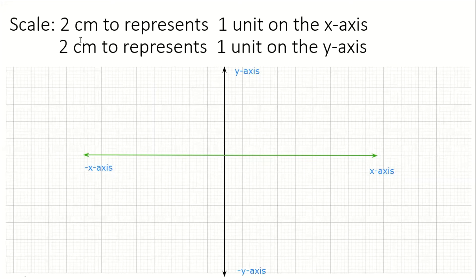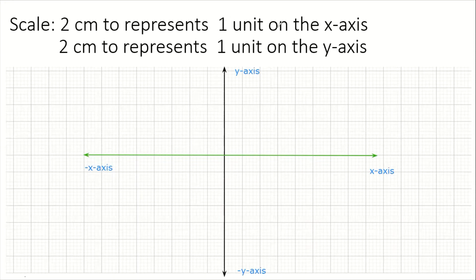Now we can put on our scale. They say to use two centimeters to represent one unit. The first thing to do is to measure two centimeters on both axes. You should always start at the origin, so let's mark our origin here.